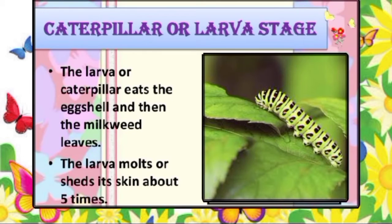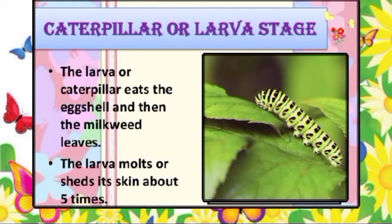The next stage is the caterpillar stage. A very tiny caterpillar hatches out from the egg. The first meal for most caterpillars is the egg shell. The caterpillar is designed to be an eating machine, and before it becomes a pupa, it will increase its body mass thousands of times. The larva or caterpillar eats the egg shell and then the milkweed leaves, and the larva molts or sheds its skin about five times.